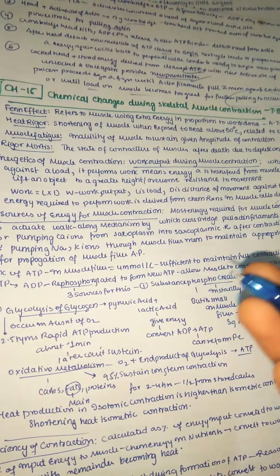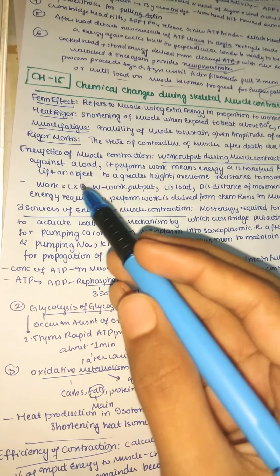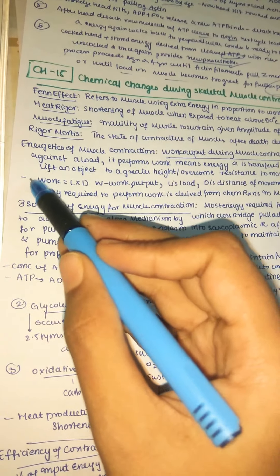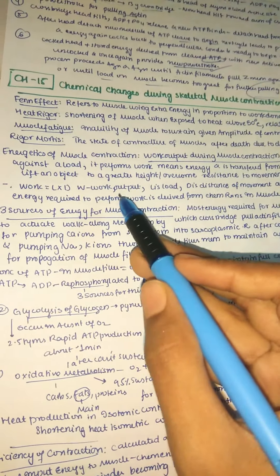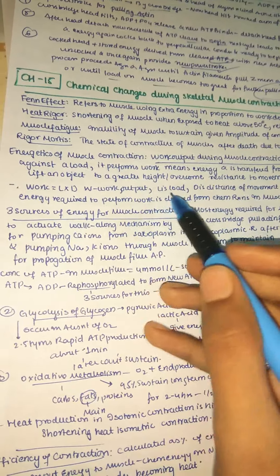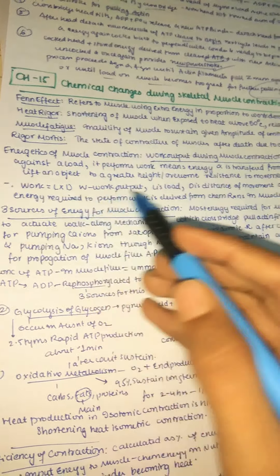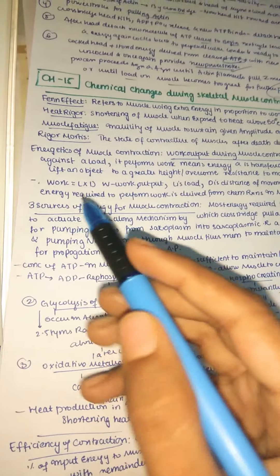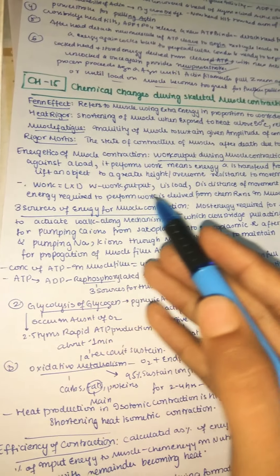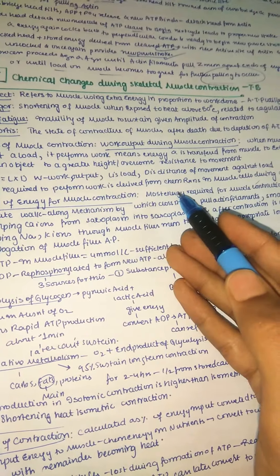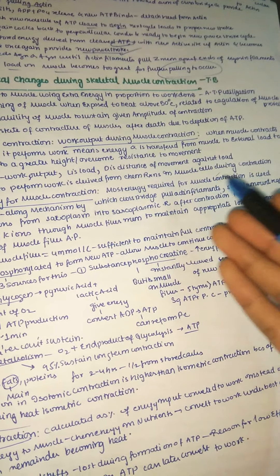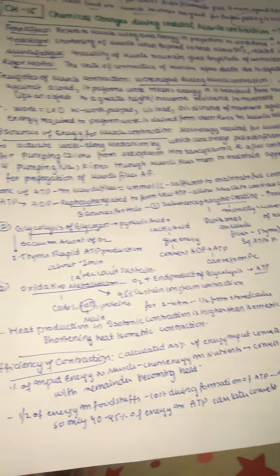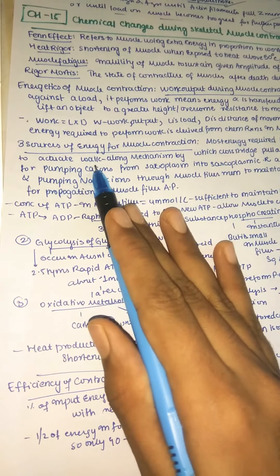Work is given by the formula W = L × D, where W is work output, L is the load, and D is the distance of movement against the load. The energy required to perform this work is mainly derived from chemical reactions taking place in muscle cells during the process of contraction.